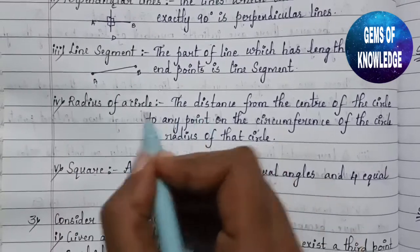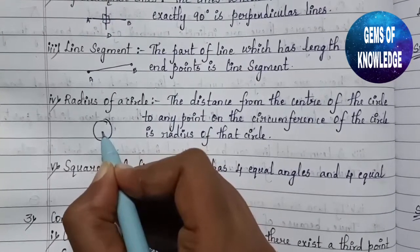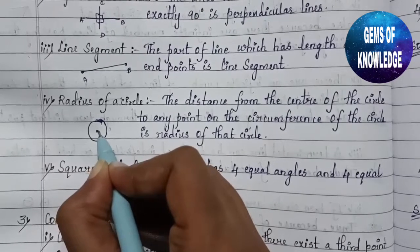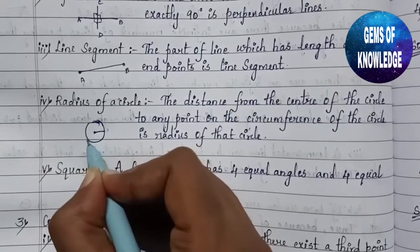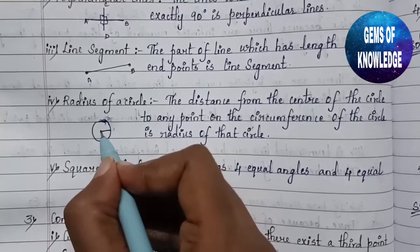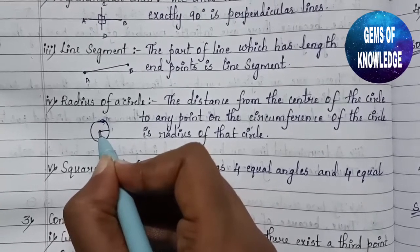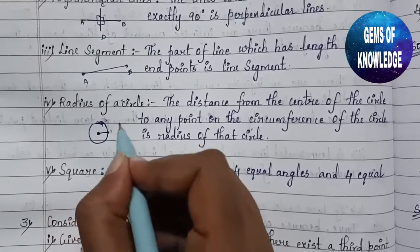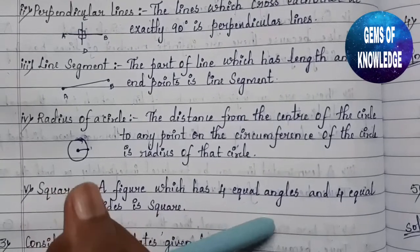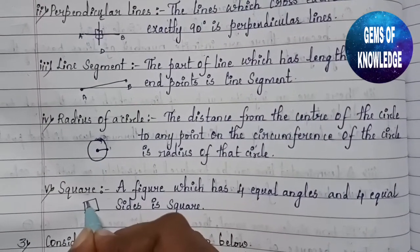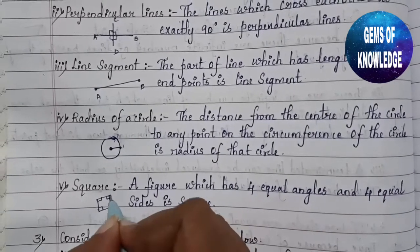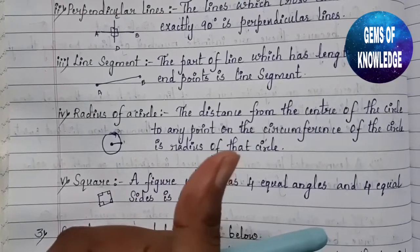The radius of a circle is the distance from the center of the circle to any point on the circumference. The circumference is the outside boundary of the circle. The line joining the center to any point on the circumference is called the radius. A square is a figure having four equal angles — each 90 degrees — and four equal sides.